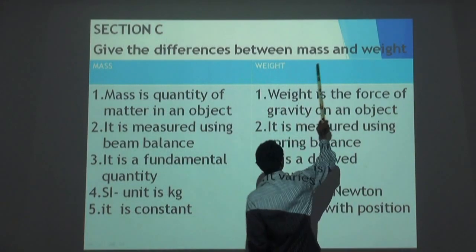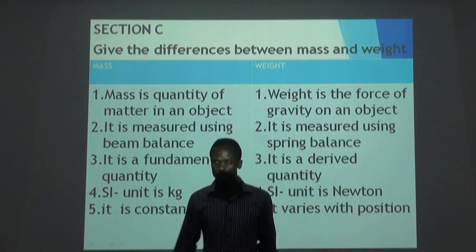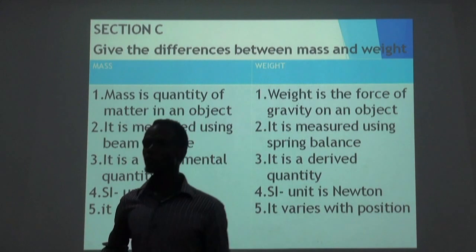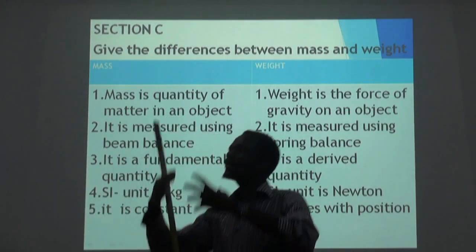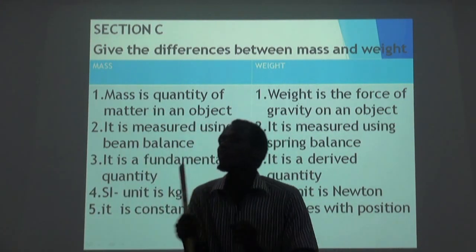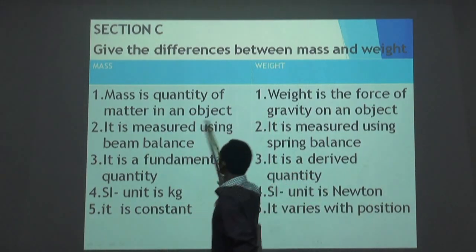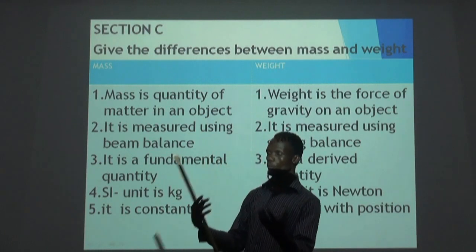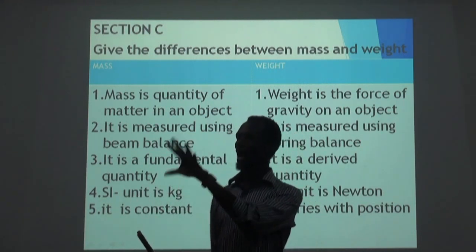Now, look at the difference between mass and weight. If you explain the difference between mass and weight, first of all you have to know the definition of mass and weight. Mass is the quantity of matter in an object — the amount of matter in an object is called mass.